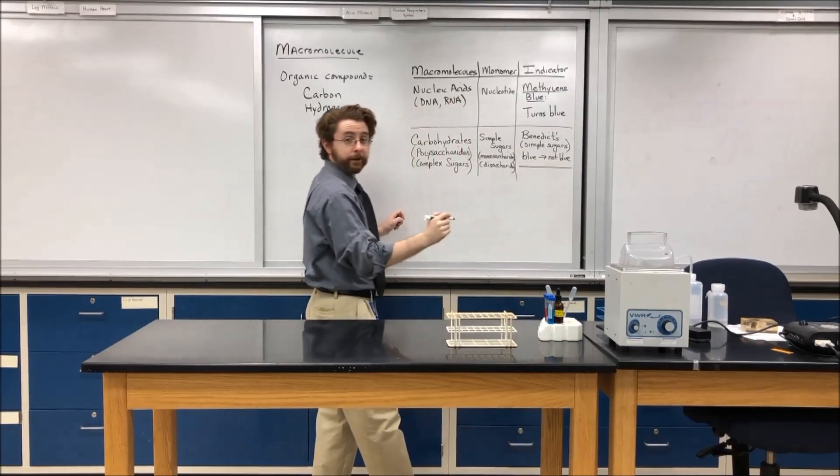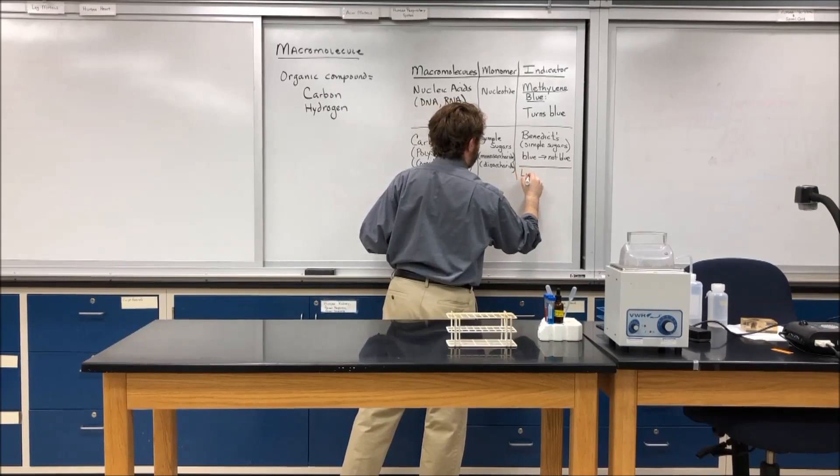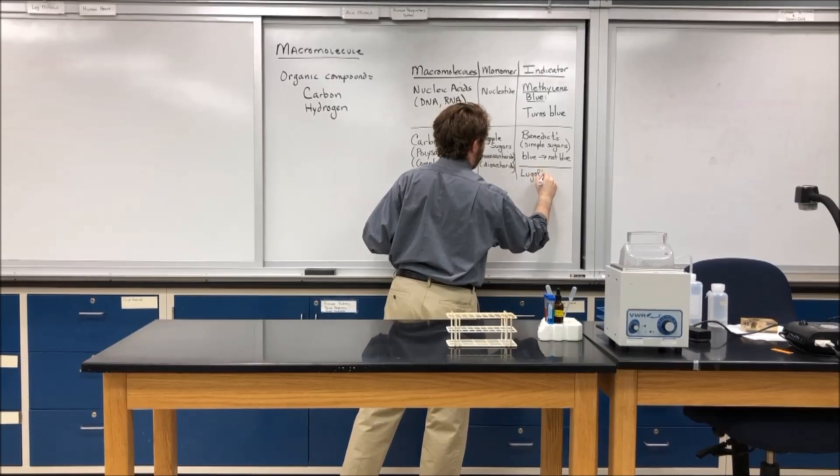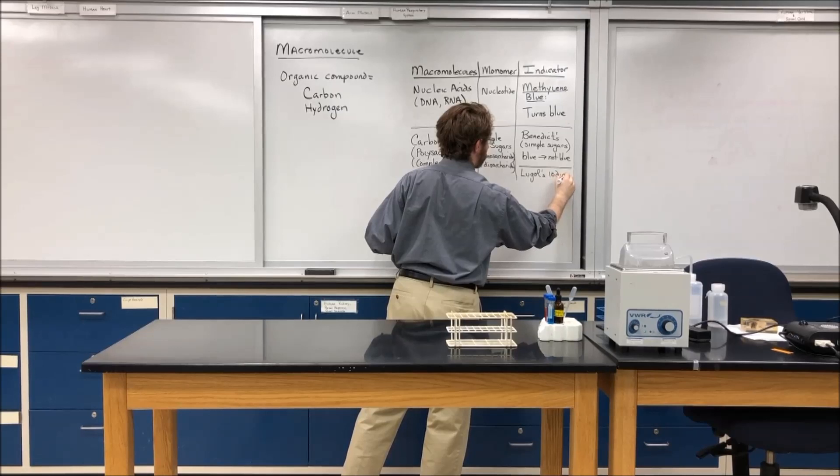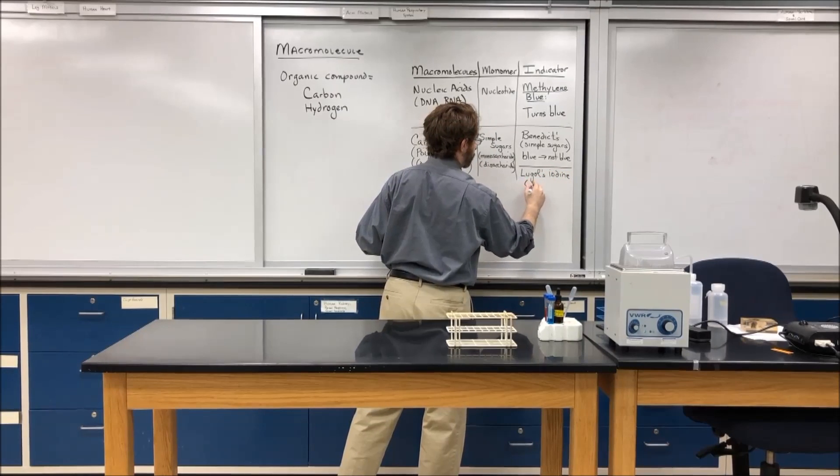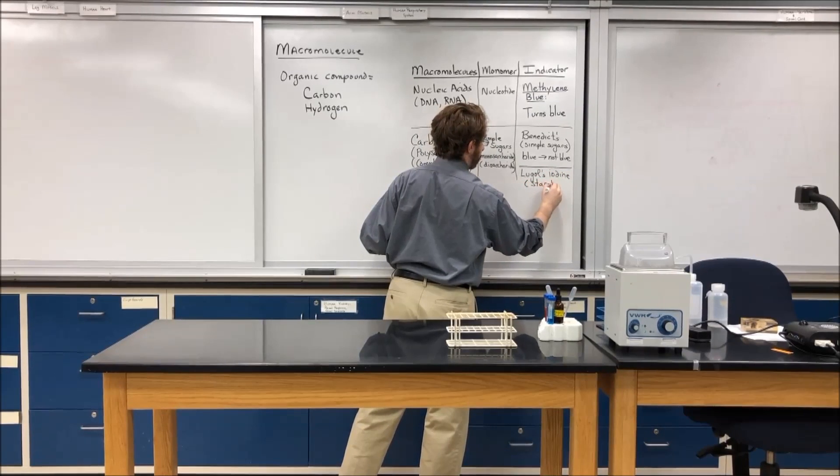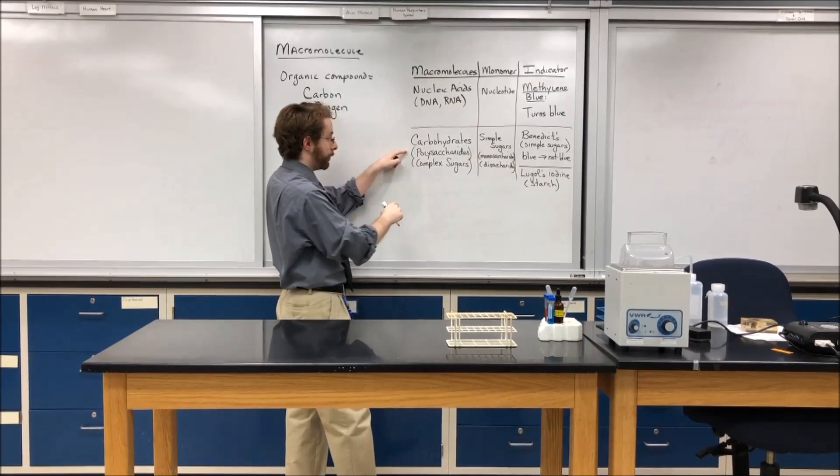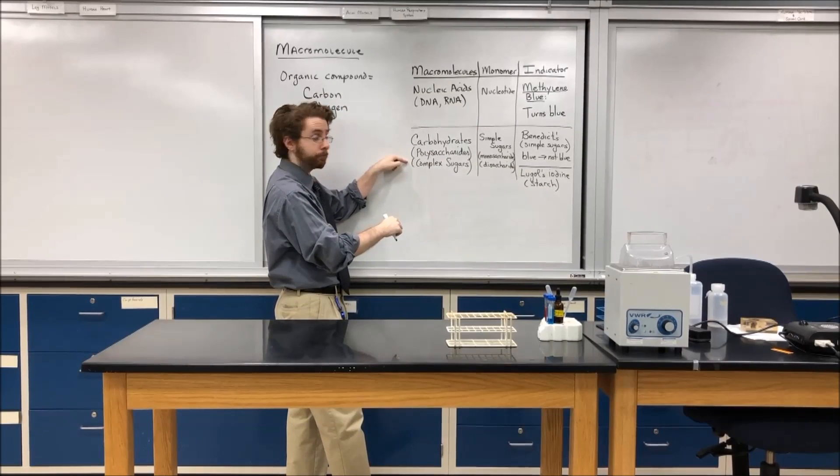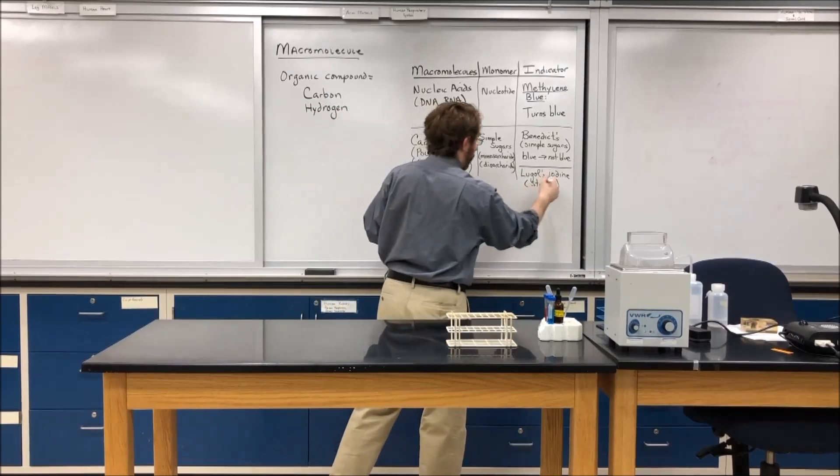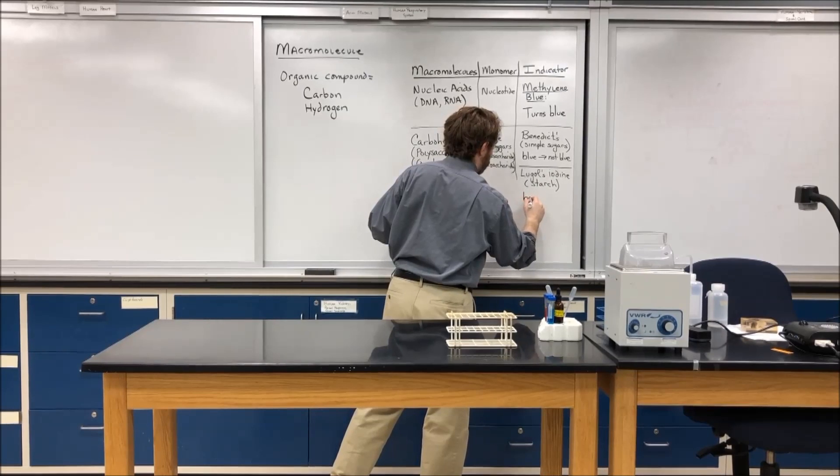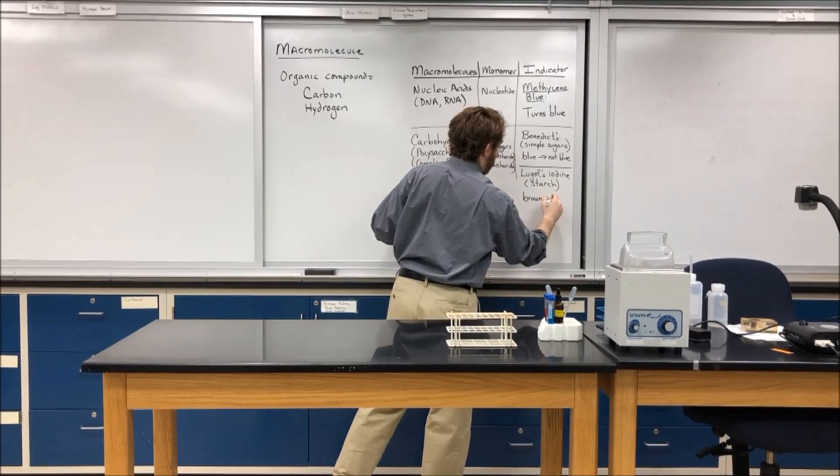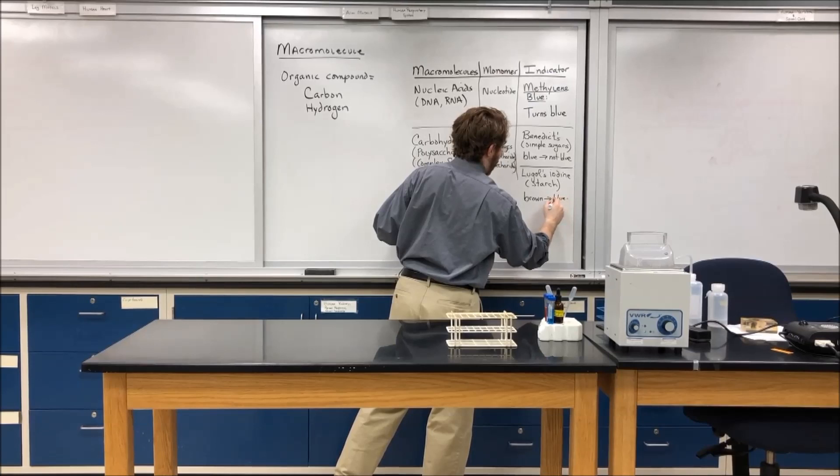And the other indicator we can use is Lugol's iodine, which we can use to detect starch. And starch is an example of a complex sugar. And iodine will go from a brown color to a bluish black color.